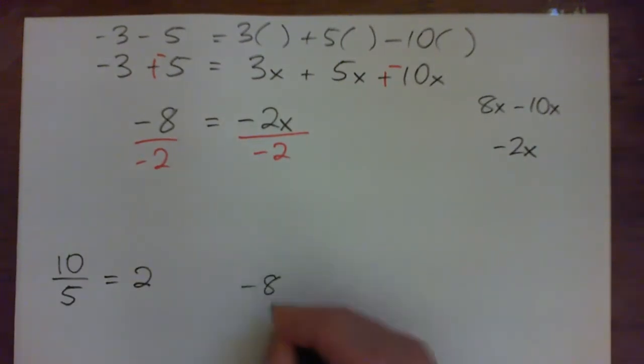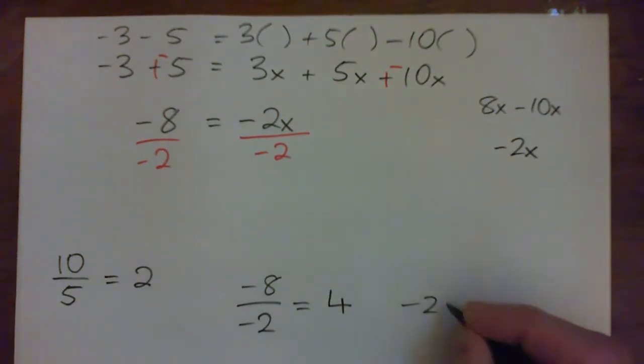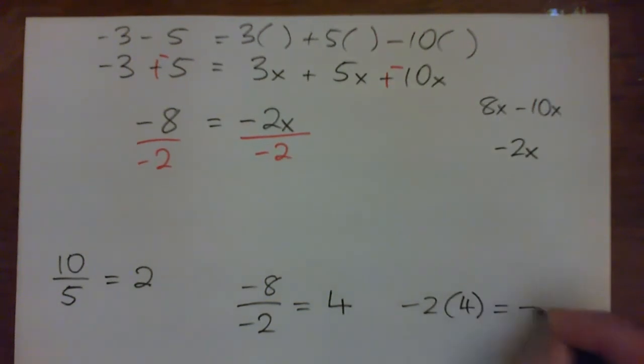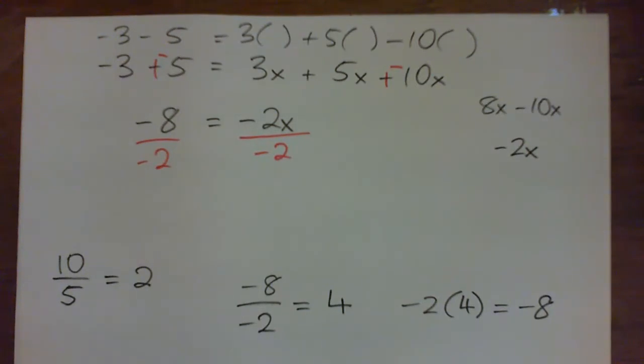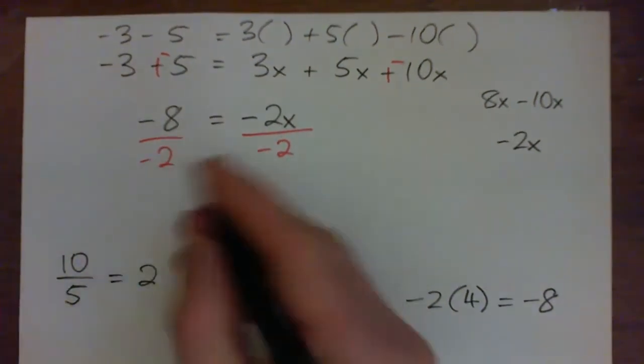So negative 8 over negative 2 is equal to 4. Why is that? Because negative 2 times 4 gives you negative 8. You see, so this times this must give this. So 5 times 2 gives 10. Negative 2 times 4 gives negative 8. That's another way of thinking about it. But yeah, negative over negative is positive. 8 over 2 is 4.